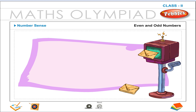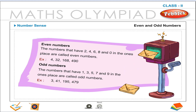Even and odd numbers. Even numbers: The numbers that have 2, 4, 6, 8, or 0 in the ones place are called even numbers. Examples: 4, 32, 168, 490. Odd numbers: The numbers that have 1, 3, 5, 7, or 9 in the ones place are called odd numbers. Examples: 3, 41, 195, 479.